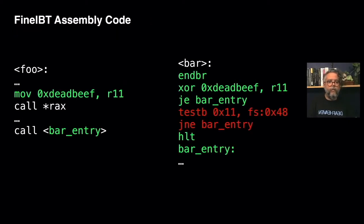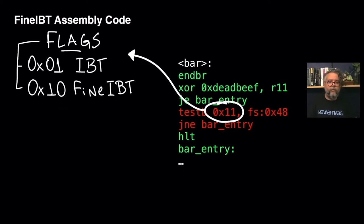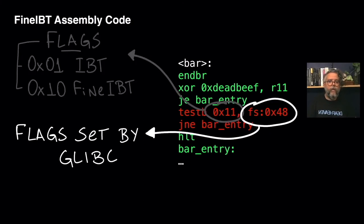In this assembly dump, you can see in green the previously described FineIBT pieces, and in red a new snippet which checks for the FineIBT policy enforcement memory flag. The bits verified — 0x1 and 0x10 — are respective to the IBT and FineIBT flags, because it doesn't make sense to enforce FineIBT without IBT. FS:0x48 is the memory address where the loader sets the FineIBT global flags.